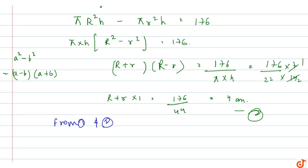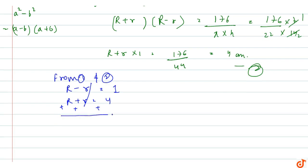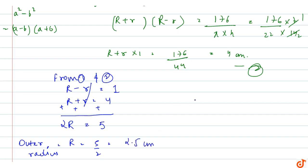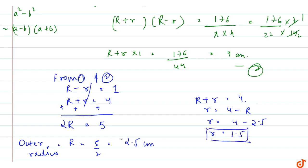From equations 1 and 2, we have R minus r = 1 and R plus r = 4. Solving these, 2R = 5, so R = 2.5 cm. Then r = 4 minus 2.5 = 1.5 cm. Therefore the inner radius is 1.5 cm and the outer radius is 2.5 cm.